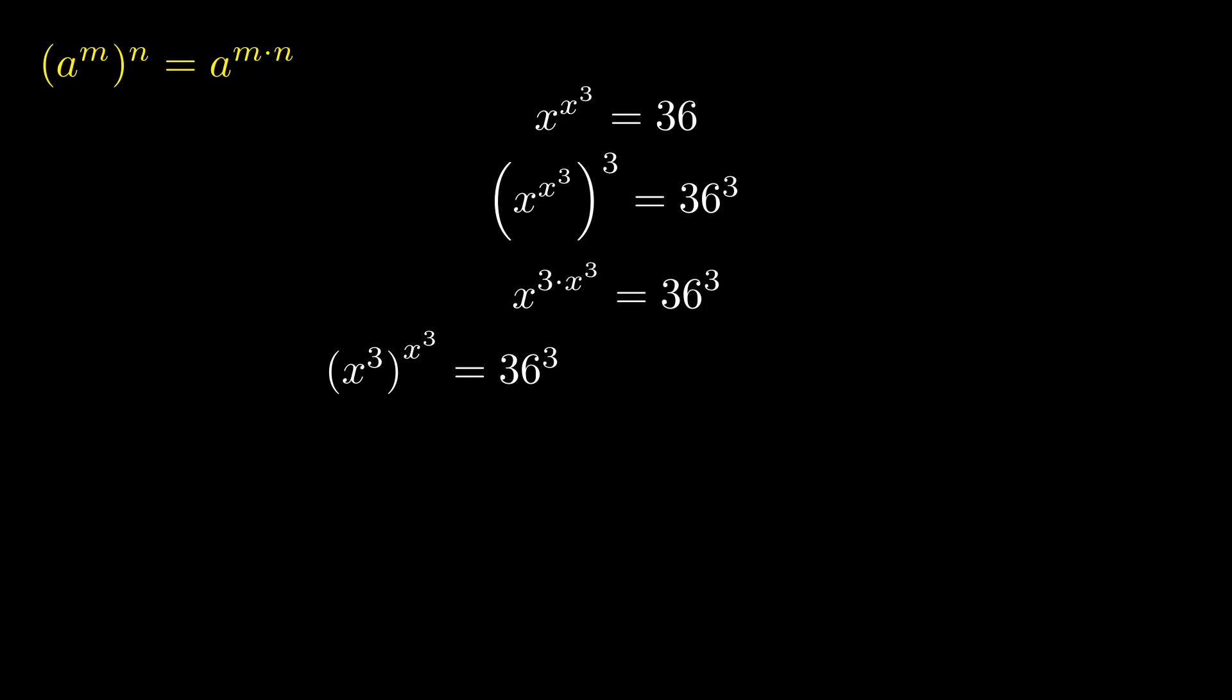Fortunately, 36 is 6 squared. Using that same trick with properties of exponents, this would be 6 to the 2 times 3, or 6 to the 6th.